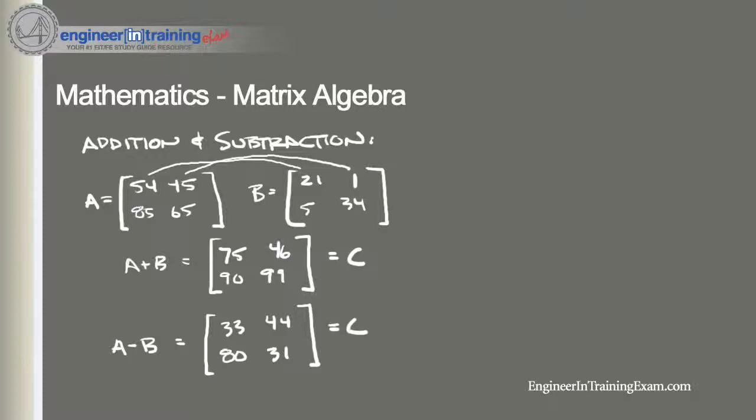The order of the matrices when added is not important. So in other words, if we have A plus B, since order is not important, that is also equal to B plus A.